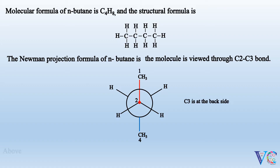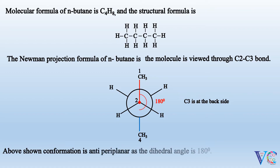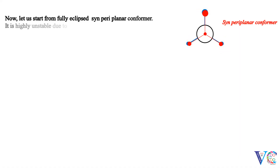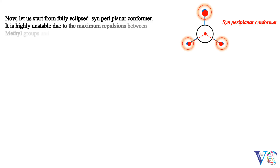The above shown conformation is anti-periplanar, as the dihedral angle is 180 degrees. Now let us start from the fully eclipsed syn-periplanar conformer. It is highly unstable due to the maximum repulsions between methyl groups and hydrogen atoms bonded to C2 and C3 carbon atoms.